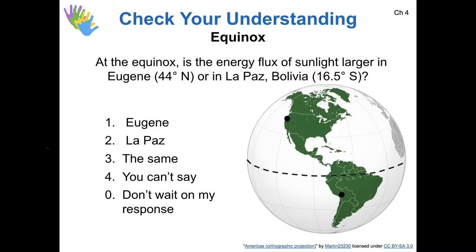Exactly. That's my reasoning. La Paz is closer to the equator, so the sun's going to be closest to zenith there. It'll still be 16 and a half degrees away from zenith, but it will be 44 degrees away from zenith in Eugene on the equinox. If the sunlight is at a steeper angle, then the energy flux is higher. And this is the case for La Paz.